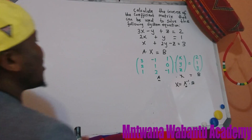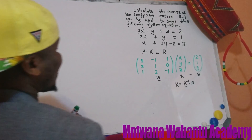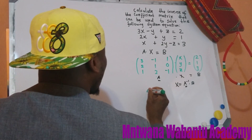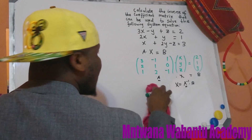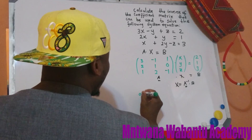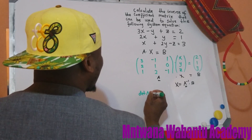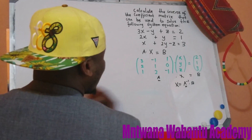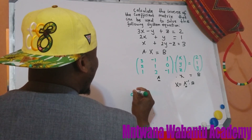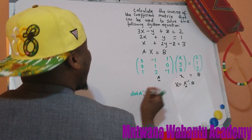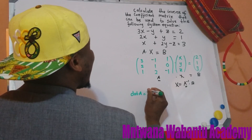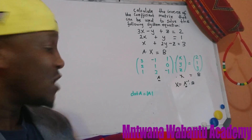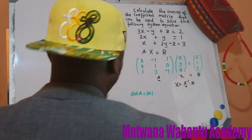First and foremost, find the determinant of matrix A. The determinant of A - you can write it as det(A) or you can write A with absolute value bars around it to indicate the determinant. So this is how you get the determinant of matrix A.